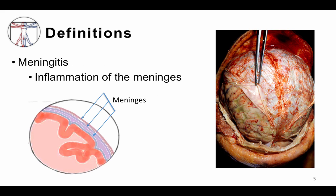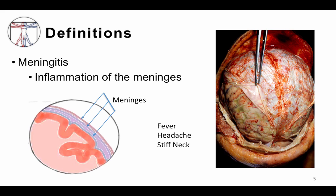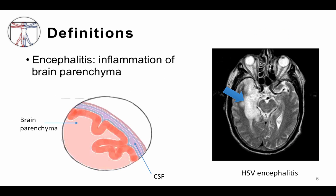Meningitis is inflammation of the meninges — the layer that surrounds the brain and houses the cerebrospinal fluid. You can see here an image of the meninges being pulled back from the brain. The most common symptoms we see with meningitis are fever, headache, and stiff neck, although we'll talk a little bit more about others.